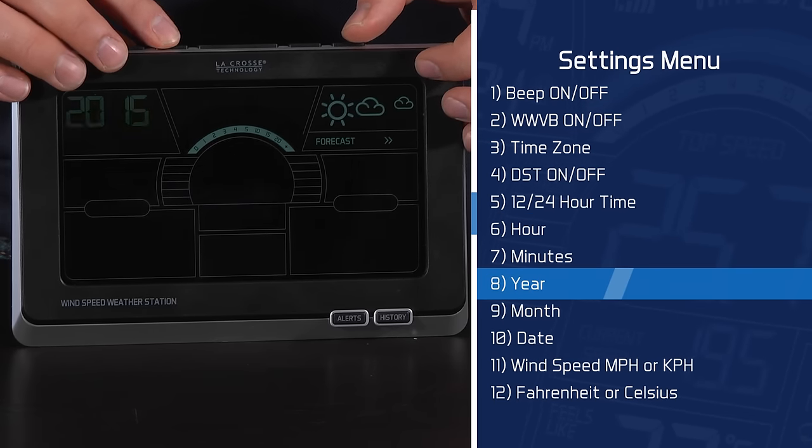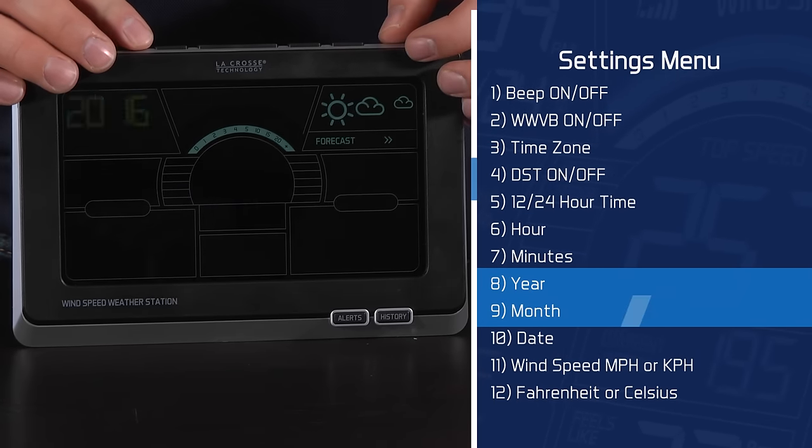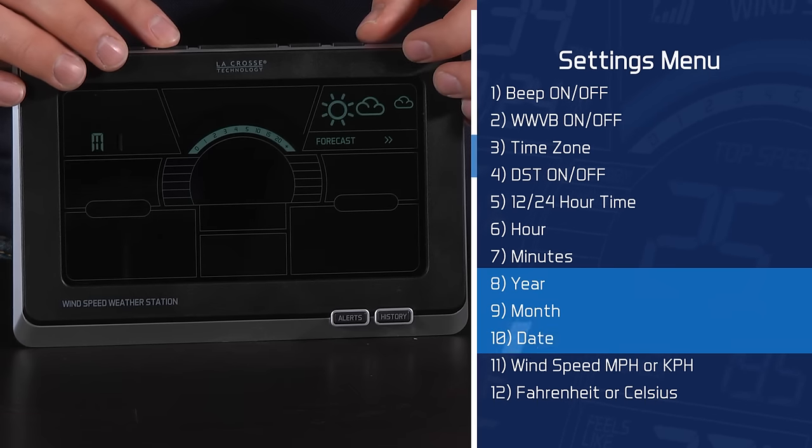The eighth item here is where we set our date, starting with the year, then moving to the month, and ending with today's date.